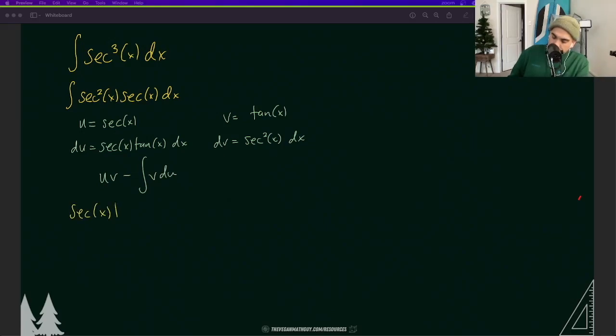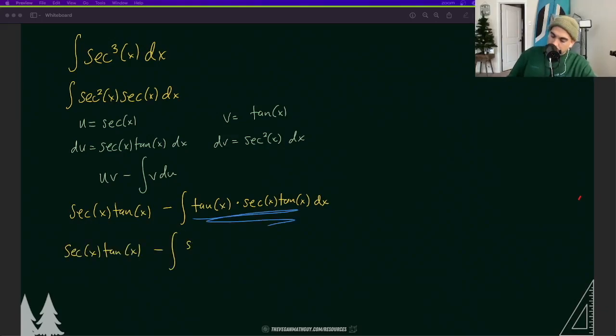So we have secant x tan x minus integral of tan x times secant x tan x dx. Let's go ahead and have some fun with this and just rewrite these things in terms of sines and cosines. I'm going to rewrite this.